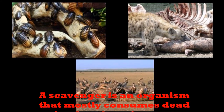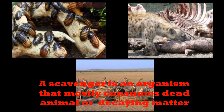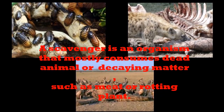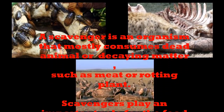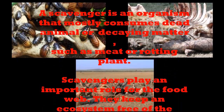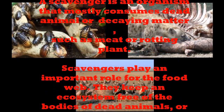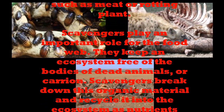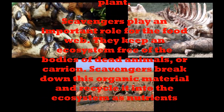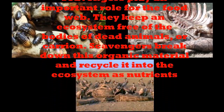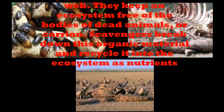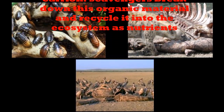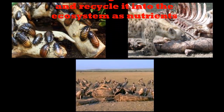A scavenger is an organism that mostly consumes dead animal or decaying matter, such as meat or rotting plant. Scavengers play an important role for the food web. They keep an ecosystem free of the bodies of dead animals, or carrion. Scavengers break down this organic material and recycle it into the ecosystem as nutrients.